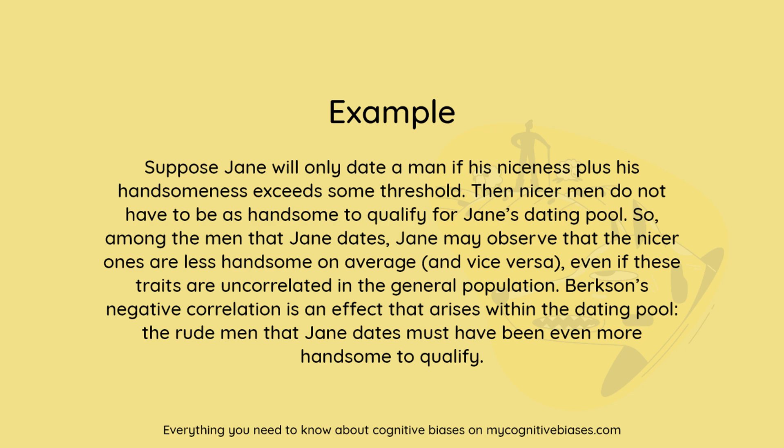Example: Suppose Jane will only date a man if his niceness plus his handsomeness exceeds some threshold. Then nicer men do not have to be as handsome to qualify for Jane's dating pool. So, among the men that Jane dates, Jane may observe that the nicer ones are less handsome on average, and vice versa, even if these traits are uncorrelated in the general population. Berkson's negative correlation is an effect that arises within the dating pool — the rude men that Jane dates must have been even more handsome to qualify.